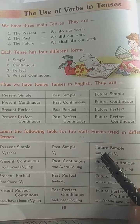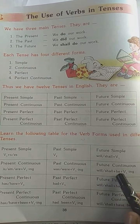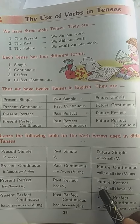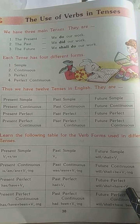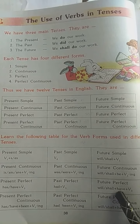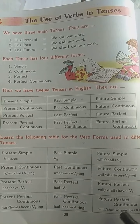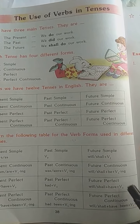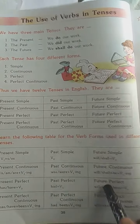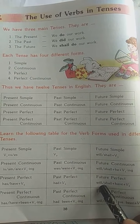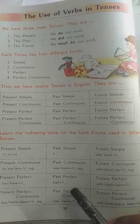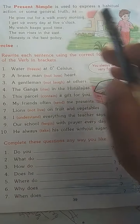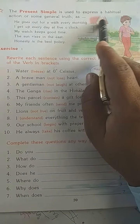Future mein V1 ke pehle shall ya will aayega. Future continuous mein shall/will plus be plus V1 plus 'ing'. Future perfect mein shall/will plus have plus V3. Future perfect continuous mein shall/will plus have plus been plus V1 plus 'ing'. Yeh sab structure hue, formula hue — tumko sab likhna hai ache se aur learn bhi karna hai, dhyan mein bhi rakhna hai.